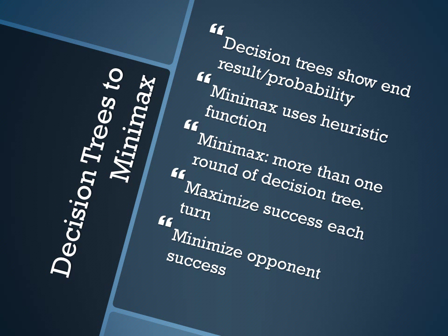Decision trees show the end result and the probability of your possible decisions. Minimax uses a heuristic function to estimate each individual node so that for each intermediate step, you can figure out which is the best move and optimize it continually. In minimax, you also take into consideration your opponent's moves. Every turn that's your move, you will maximize your success, whereas every opponent's move, you will minimize their success.